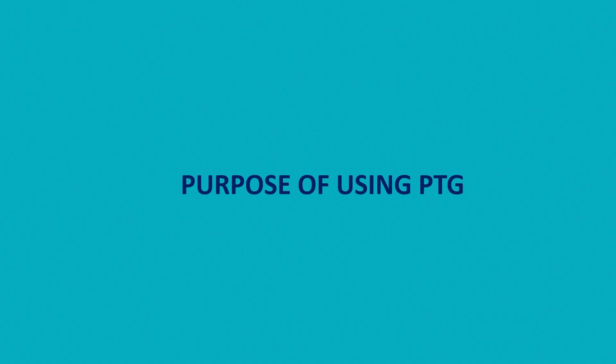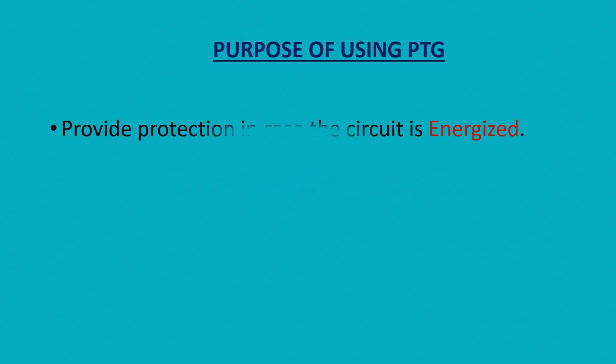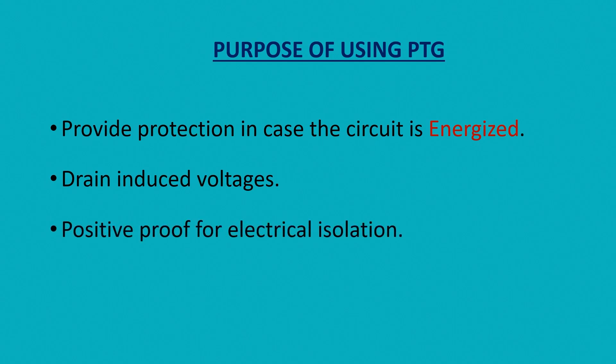So what is the purpose of using portable temporary grounds? PTGs provide protection to the worker and the equipment in case the circuit is energized by mistake. PTGs drain electrostatic and electromagnetic induced voltages. PTGs provide positive proof for electrical isolation. PTGs provide bonding.